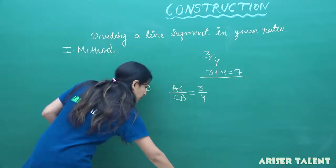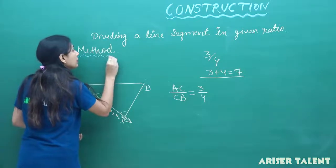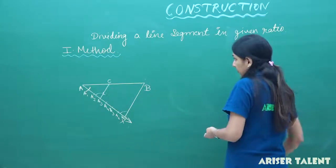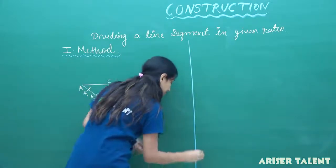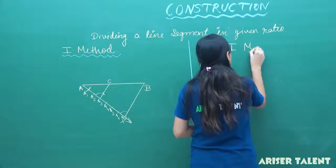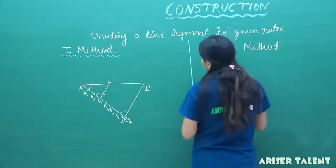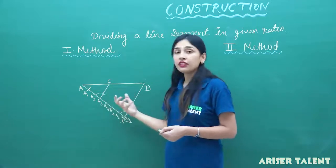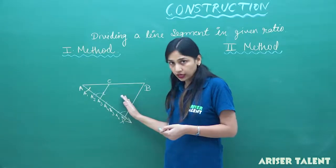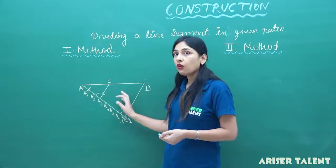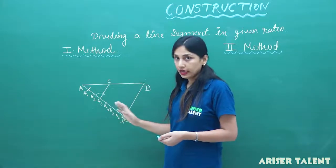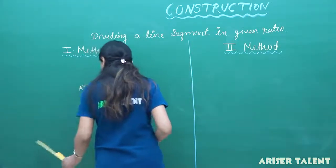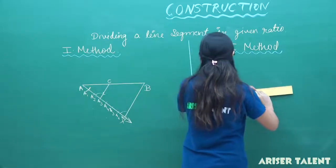After knowing the first method, we will move towards the second method. I am discussing it in detail here, but when we do questions I will not repeat each step since we have already discussed it. We will directly work with the ratios. So now — the second method. Again, I am having a line AB.